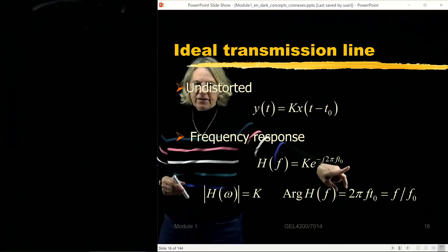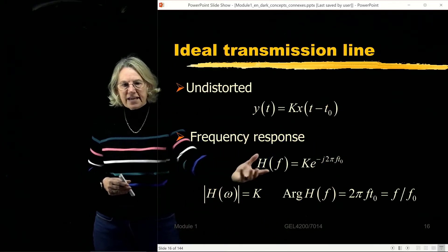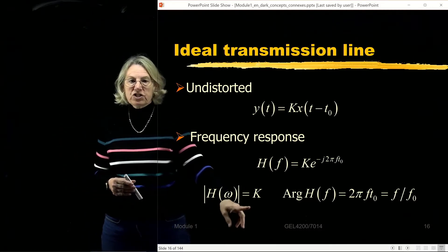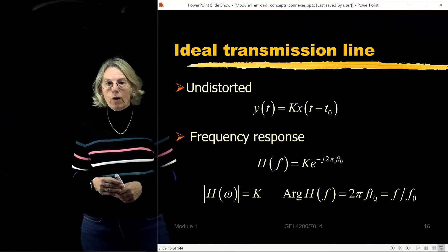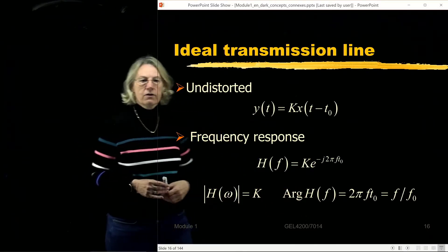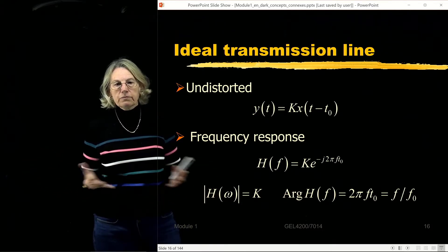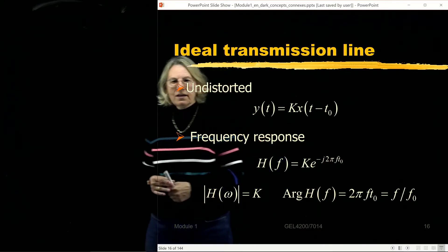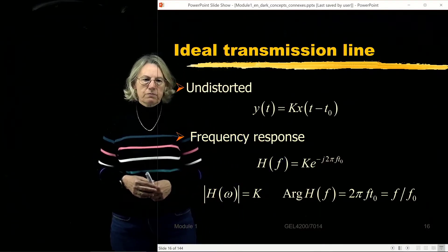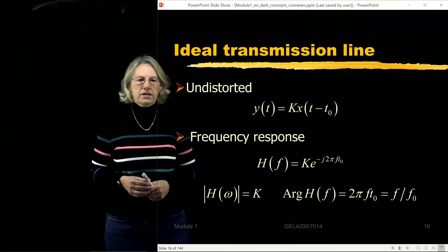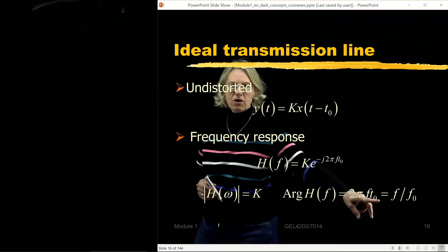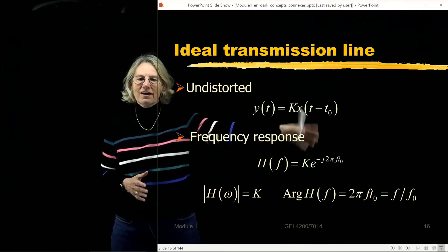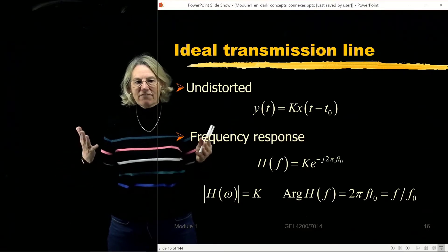Looking at this complex frequency response, the modulus is just k because the complex exponential has modulus 1. The phase — written as the argument of H of f — is 2 pi f t0. I often write 2 pi t0 as 2 pi over f0, so another way to write the phase is f divided by f0.